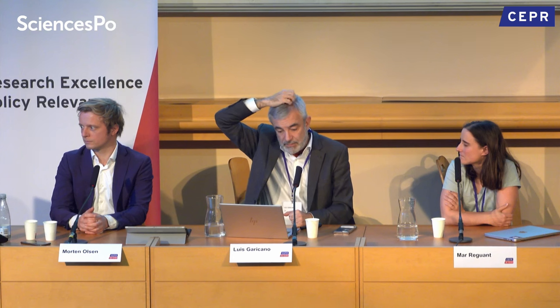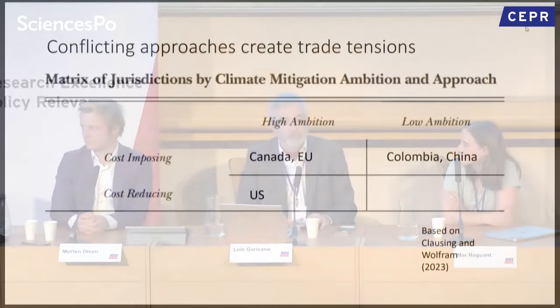The problem is twofold. First, the US and EU have completely different approaches: the EU imposes higher costs by taxing bad behavior, while the US reduces the cost of doing good things through subsidies. The result will still be that it costs half as much to produce in the US as in Germany by end of the decade. That is a catastrophe for Europe and will generate a lot of tensions.